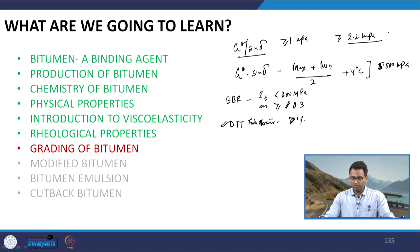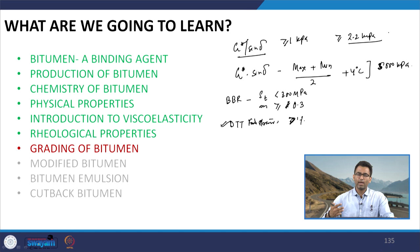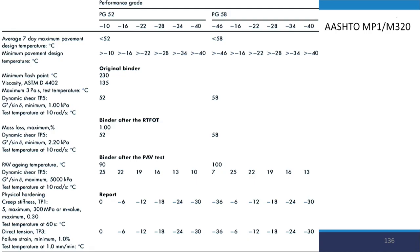Having done this revision, let us now see how the grading actually looks and how different grades can be assessed. The code is AASHTO MP1, which is now converted to AASHTO M320, and this is just a partial image from the grading chart. Here I have shown only PG 52 and PG 58; likewise there are various other grades. In this slide we will try to have a look at how to read this chart for grading.